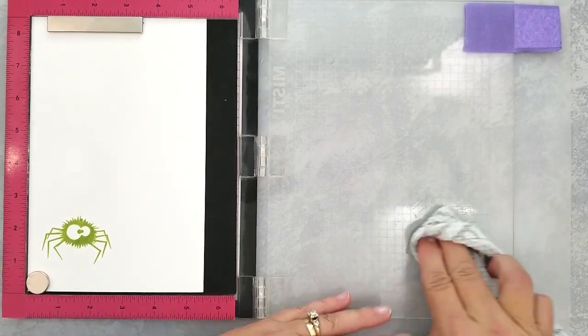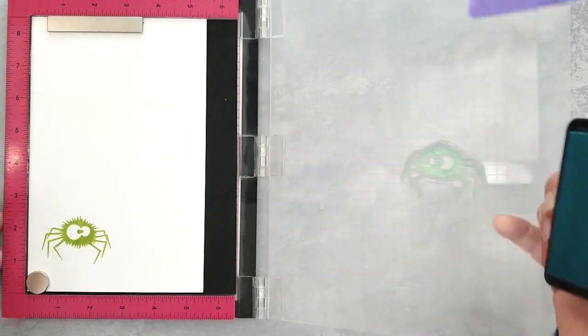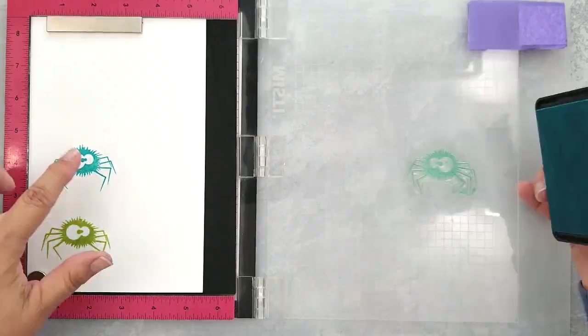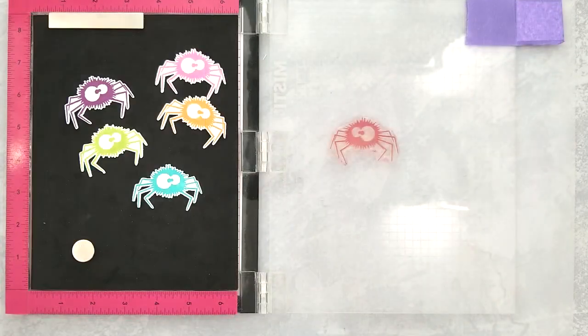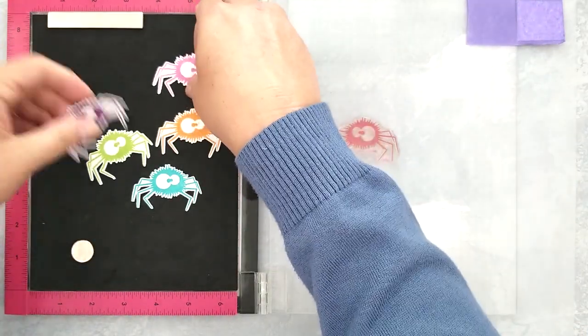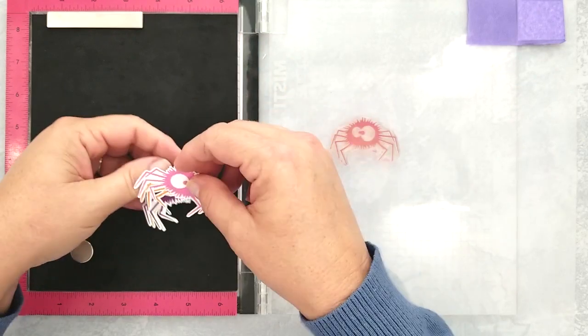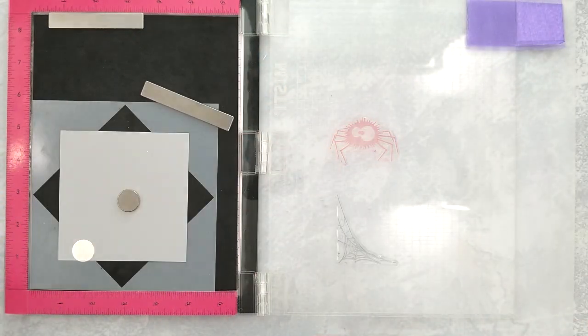Once I have the spider stamped, I'm going to use my Scan and Cut to cut them out. You can easily fussy cut these, but I'm horrible at fussy cutting, so I stick with the Scan and Cut. And here's the cuties all cut out and ready to go.